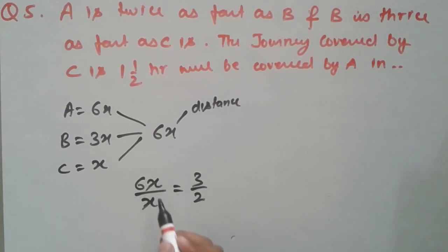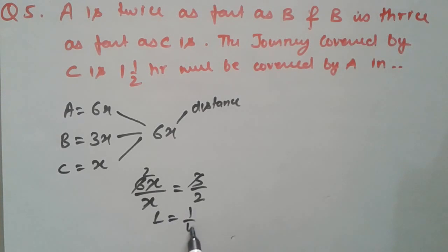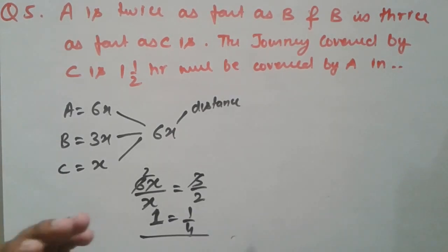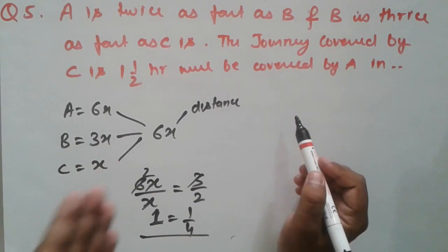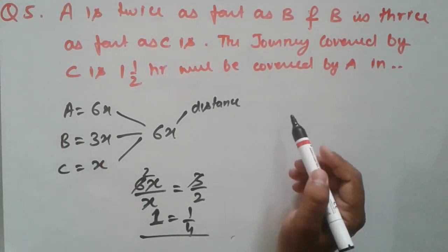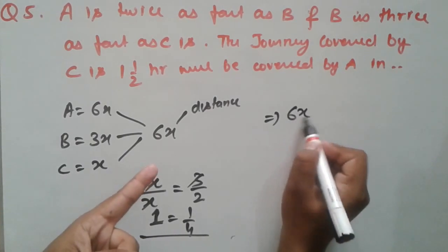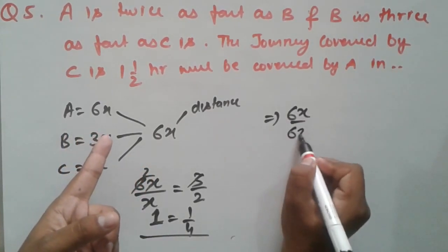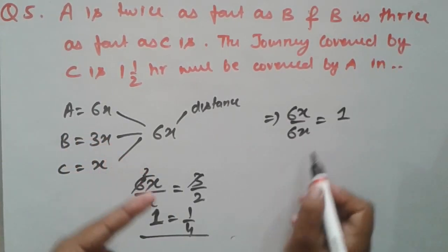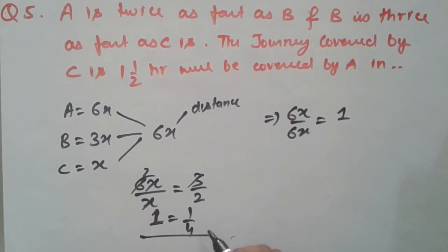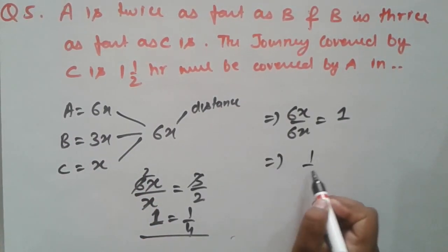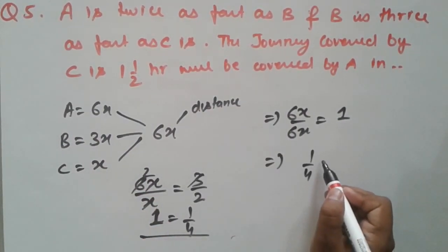The x values cancel. So 6 units equals 3/2, meaning 1 unit equals 1/4. Time taken by A: total distance is 6x and A's speed is 6x, so time = 1 unit. The value of 1 unit is 1/4 hour, which equals 15 minutes. So 15 minutes is the final answer.